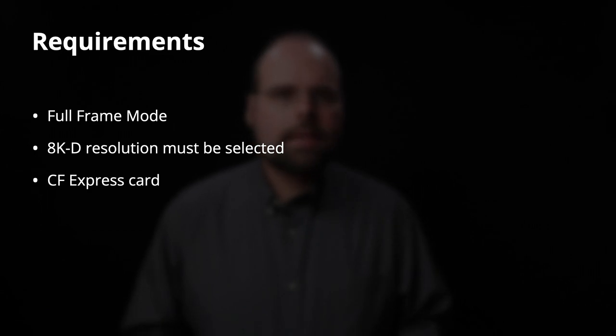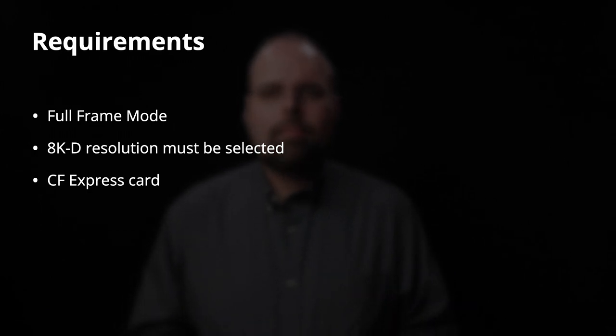To enable raw recording on the R5, there are three requirements. First, the camera has to be set to full frame mode — you cannot shoot raw in movie crop mode, so you can't get the free teleconverter effect or use EF-S or Super 35 lenses. Second, the camera has to be set to 8K DCI resolution — you can't use smaller resolutions like 4K or 1080p, since those aren't raw, and for whatever reason you also can't select 8K UHD. Third, due to the bit rates involved, you have to use a CFexpress card as your output.